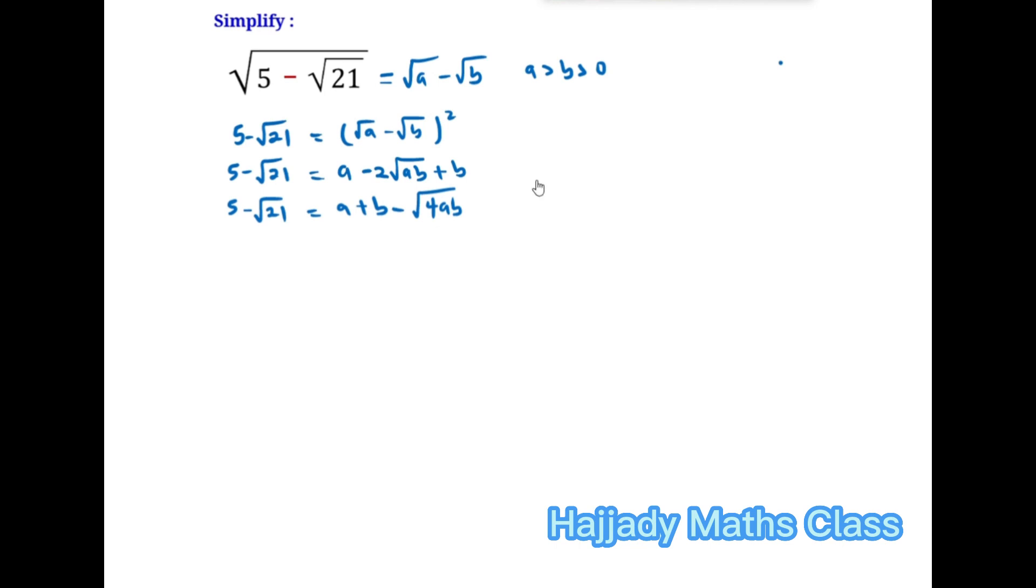So the next thing for us to do is to equate the like terms. Now looking at this, we can see that A + B is 5. Also, √4AB can be equated to √21.